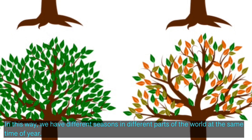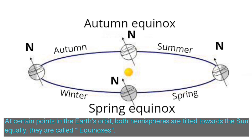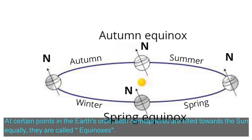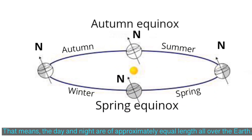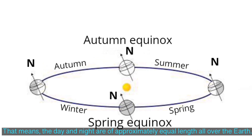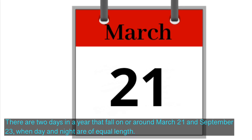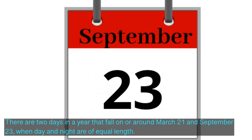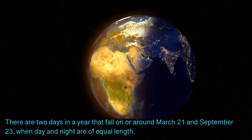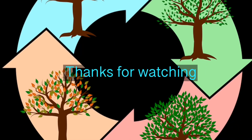In this way, we have different seasons in different parts of the world at the same time of year. At certain points in the Earth's orbit, both hemispheres are tilted towards the Sun equally — these are called equinoxes, which means the day and night are of approximately equal length all over the Earth. There are two days in a year — on or around March 21 and September 23 — when day and night are of equal length. So kids, this is how the seasons change. I hope you enjoyed the video!